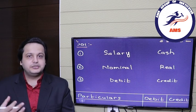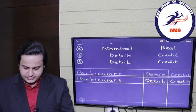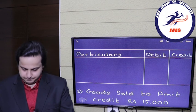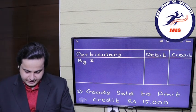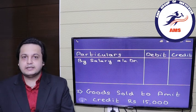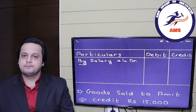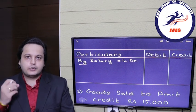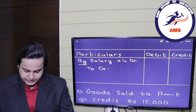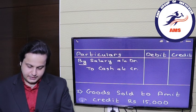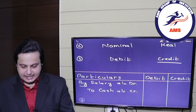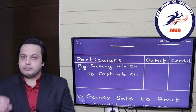Let's write down the journal entry in the proper format. When writing, you start with the debit account: 'By Salary Account Debit.' You will always start the debit entry with the prefix 'By.' Next is the credit account: 'To Cash Account Credit.' Then we will write down the amounts.